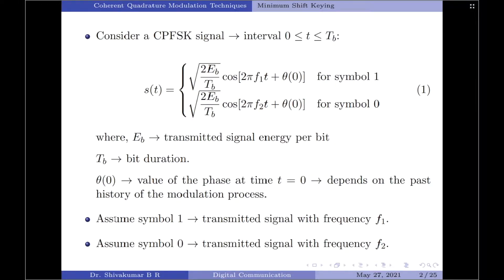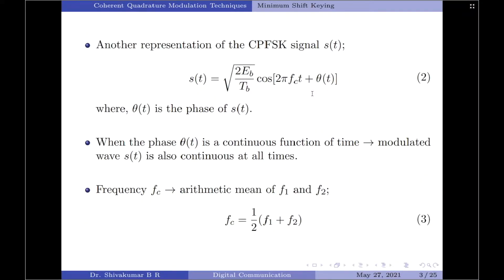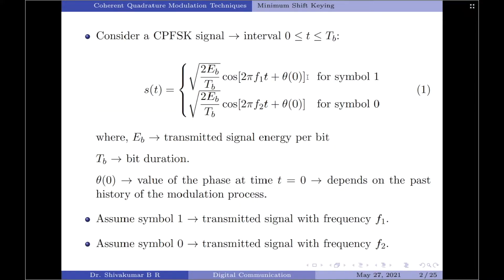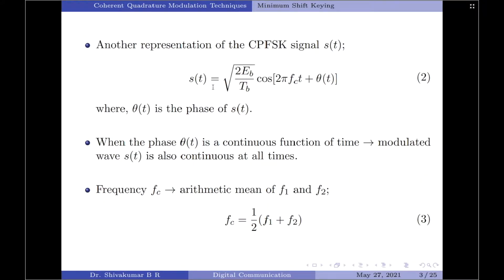Symbol 1 is represented by the transmitted signal with frequency f₁ and symbol 0 is represented by the transmitted signal with frequency f₂. We have another representation for the continuous phase FSK signal as an alternative to equation 1, given by S(t) = square root of 2E_b/T_B · cos(2πf_c·t + θ(t)), where θ(t) is the phase of the transmitted signal at time t. When phase θ(t) is a continuous function of time, the modulated wave S(t) is also continuous at all times.